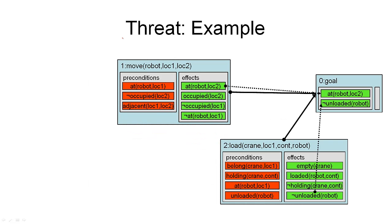I will now introduce the concept of a threat in a partial plan, and I will use an example to illustrate this. What we see here is a partial plan to which I've already added two actions to support the two goal conditions. We also see the dummy action for the goal over here. And there should be a second dummy action for the initial state, but since we're not going to use that in this example, I've left it out here to save a little space.